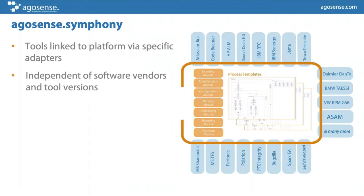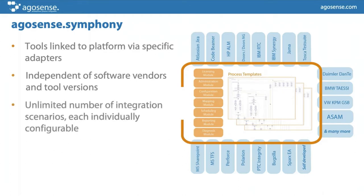Another advantage is complete independence from tool versions and software vendors. If a new version of Jira comes out with API adjustments, it's our task to update the adapter — you can update your system with a new adapter version in the running system; it's hot-deployable. We've seen cases like Volkswagen changing their default data format for KPM, and we take care of that so you can make use of it at any time. The system is highly configurable, making it easy to set up new projects for existing customers or new exchange scenarios with new customers.